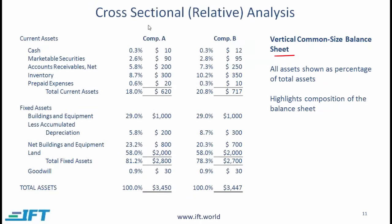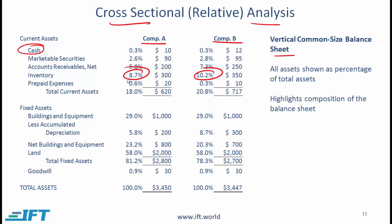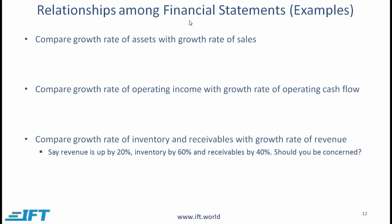The vertical common size balance sheet can also be used for cross-sectional analysis. Looking at two companies — Company A and Company B — every item on the balance sheet is shown relative to total assets. Inventory represents 8.7% of total assets for Company A, whereas it represents 10.2% for Company B. All else equal, this implies that Company A is doing a better job of managing inventory.